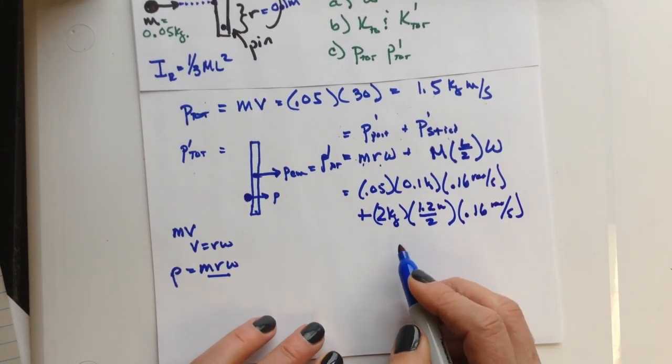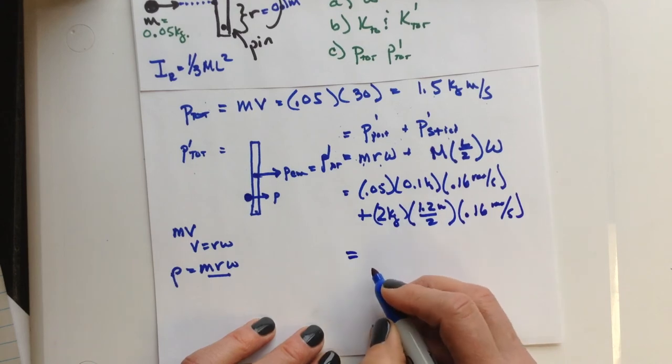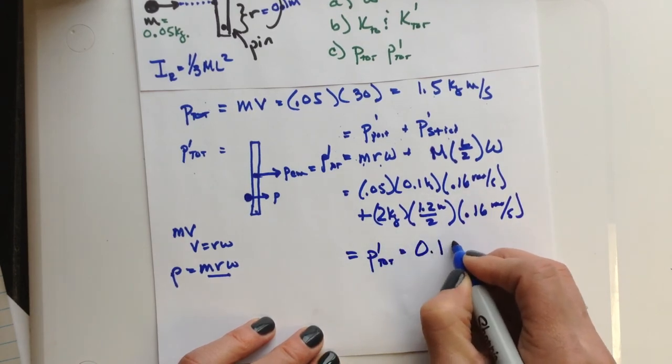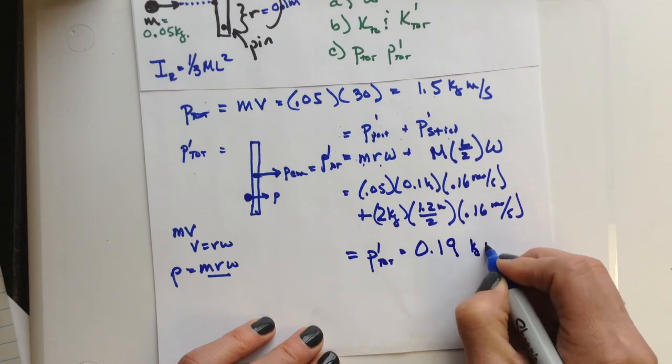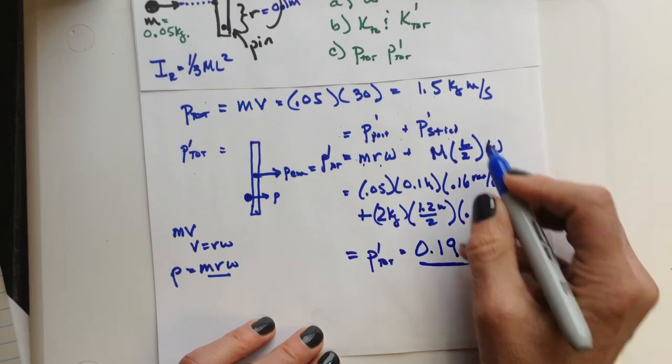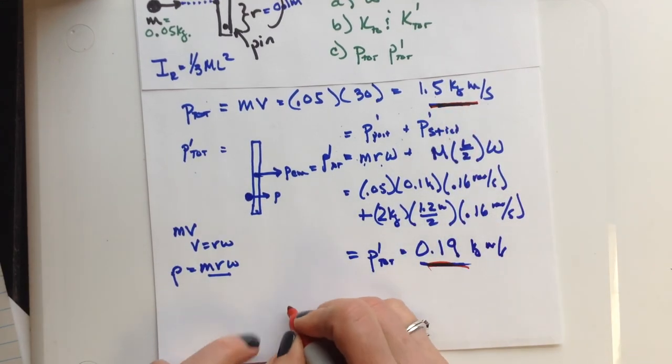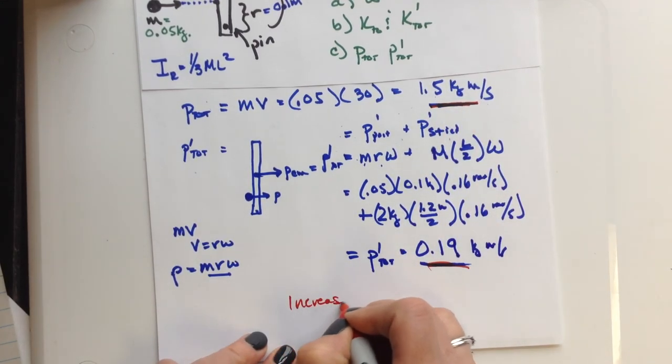Now what really is kind of shocking, if we substitute all those numbers in, our final total momentum is 0.19 kilogram meters per second. So look at that. We compare those two. We've actually increased the linear momentum.